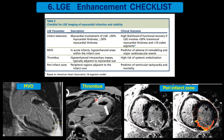Second finding: thrombus attached to the left ventricular wall, which has a higher risk of systemic embolization like stroke, arterial occlusions, and lower limb occlusions. Third: the peri-infarct zone — within the infarct area, using signal intensity models, the orange areas represent two to three standard deviations of enhancement (scar), while yellow represents the peri-infarct zone at just two standard deviations. The greater the peri-infarct zone, the higher the predictor of ventricular tachycardia and mortality.